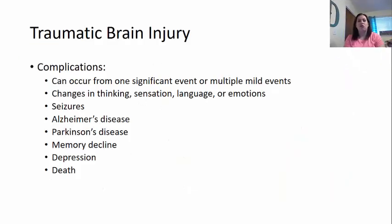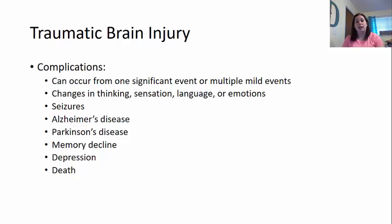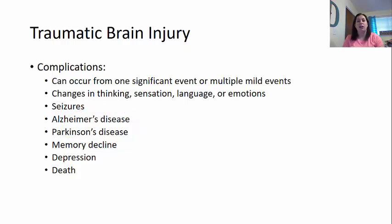There are some complications with traumatic brain injuries. They can occur from one significant event or multiple mild events — which is one reason there are now precautions with concussions, as many small concussions can cause major problems. They can cause changes in thinking, sensations, language, or emotions, and could cause the individual to develop seizures. There's also been a link between Alzheimer's disease and Parkinson's disease and prior traumatic brain injuries. Memory decline, depression, and even death can result.